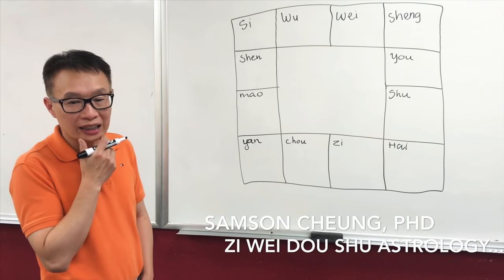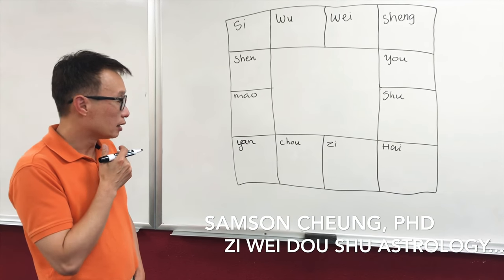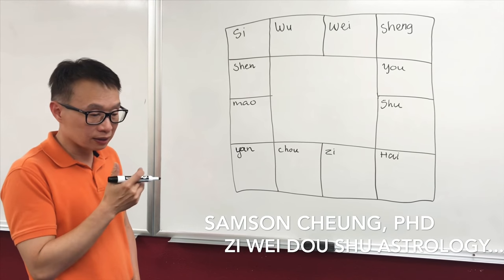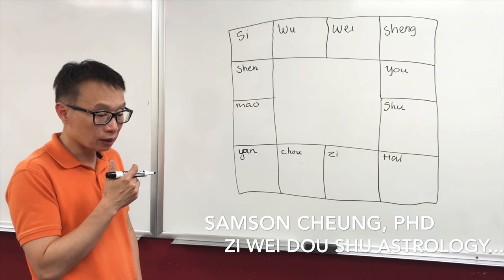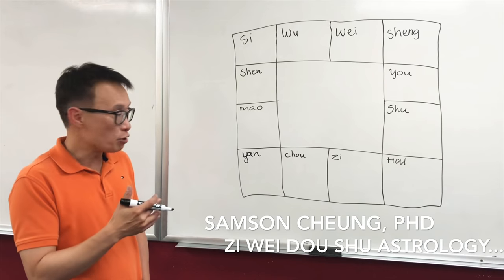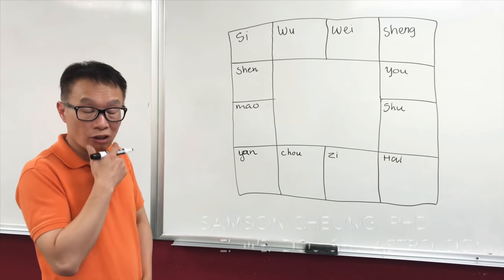In Ziwei Dou Shu we use the Chinese calendar, and one component of the Chinese calendar is using heavenly stems and earthly branches. The drawing here shows the earthly branch.